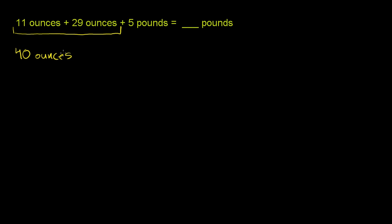We need to add 40 ounces to 5 pounds to get a certain number of pounds. Let's convert 40 ounces to pounds. Once we have that in pounds, we can add it and get our final answer.